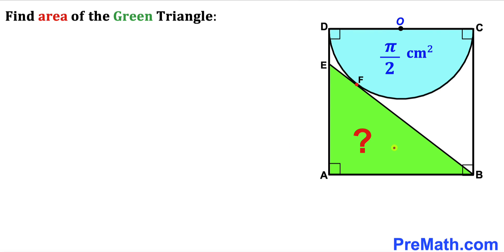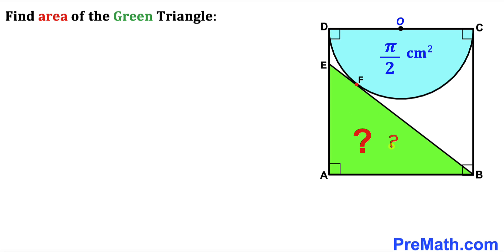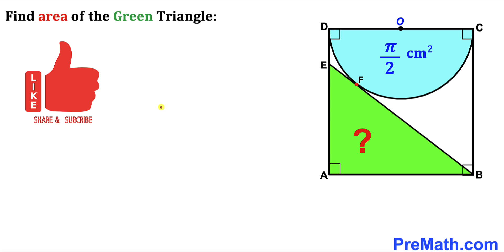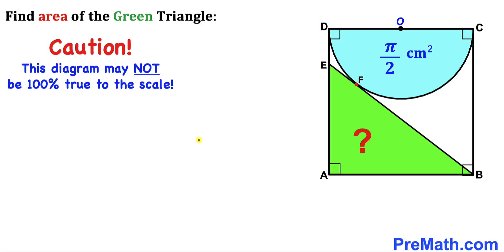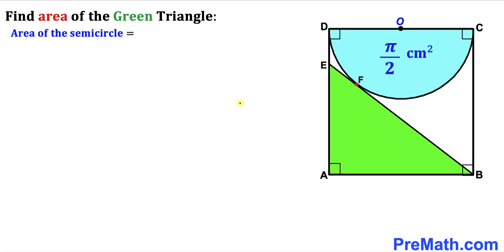In this video we have a green triangle and a blue semicircle inscribed in a square ABCD, such that the area of this semicircle is π/2 centimeter square. Moreover, line EB is tangent to this semicircle, and we are going to calculate the area of this green triangle. Note that this figure may not be 100% true to scale. Let's get started with the solution.